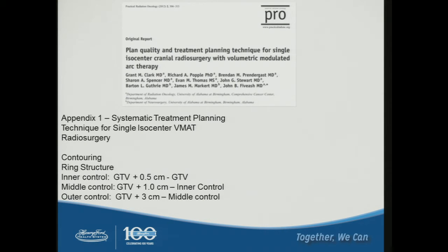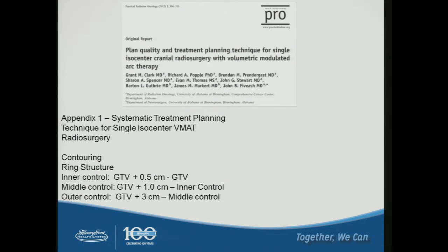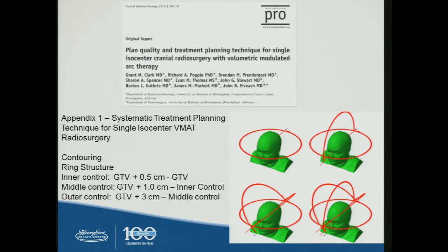A nice paper published by UAB describes a recipe for using VMAT to treat single iso with multi-targets. In the appendix, they develop ring structures — three of them: inner control (5 mm), middle control (10 cm), and outer control (3 cm) — to push dose down to the tumor while minimizing normal tissue dose. They recommend the number of arcs based on number of lesions: one or two arcs for one or two lesions, and up to five arcs for up to ten lesions.